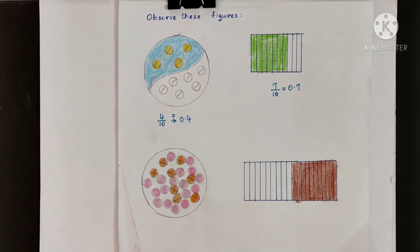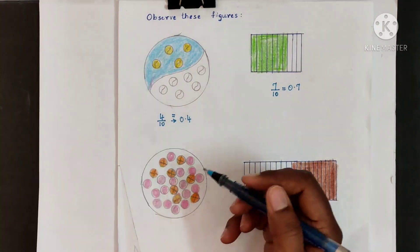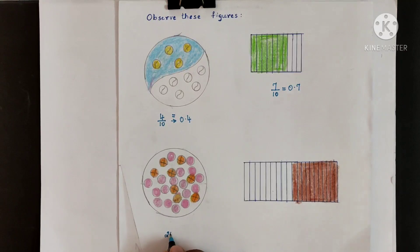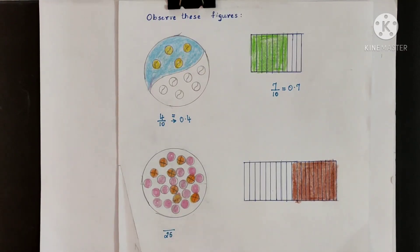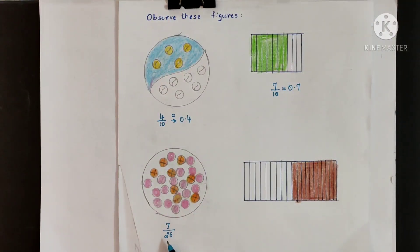Now look at the next picture. Here you see different types of balls. What is the fraction for the orange shaded balls? First you should count the total number of balls. Here, together there are 25 balls. Out of 25 balls, 7 balls are shaded. The fraction for the orange shaded balls is 7 by 25, or 7 25ths.